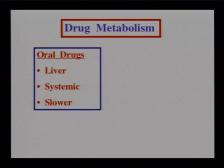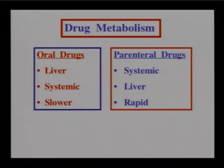Drugs given by mouth go first to the liver via the portal circulation, get detoxified and broken down, then enter the systemic circulation. They take longer to act because of this detoxification process. IM and IV drugs get into the systemic circulation first and then go to the liver, so they act more quickly. If you want a drug to act fast, give it IM or IV. Oral medications take longer to act.